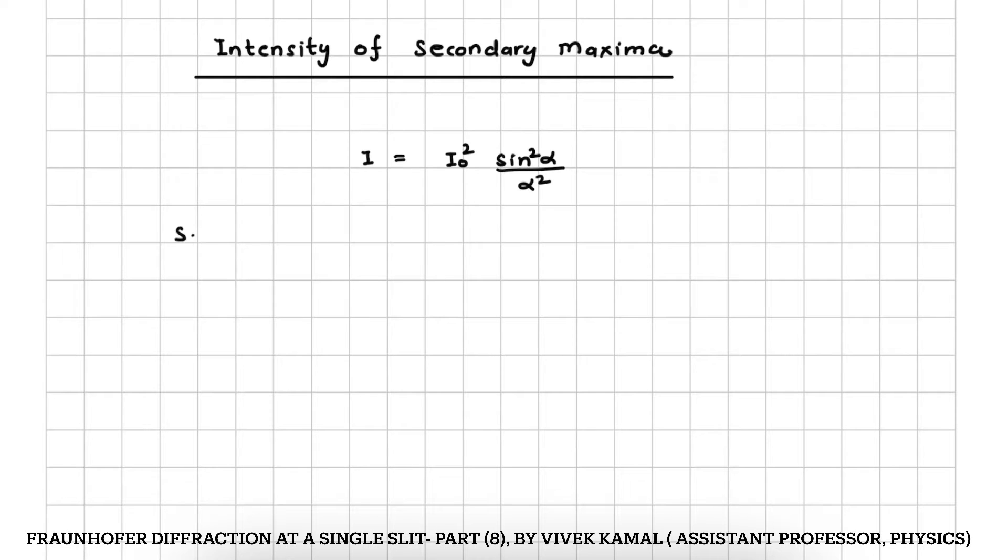We know that for secondary maxima, alpha should be equal to 3 pi by 2 for first secondary maxima, should be equal to 5 pi by 2 for second secondary maxima, and should be equal to 7 pi by 2 for third secondary maxima, and so on.